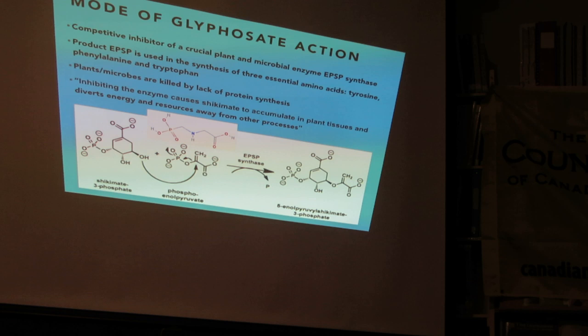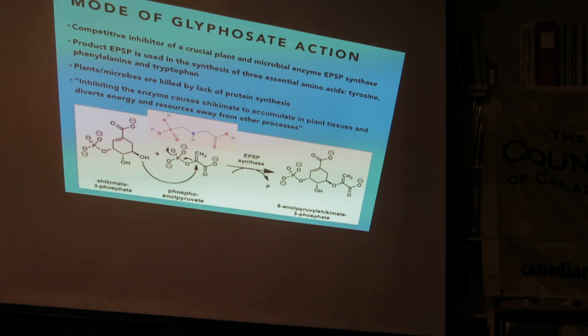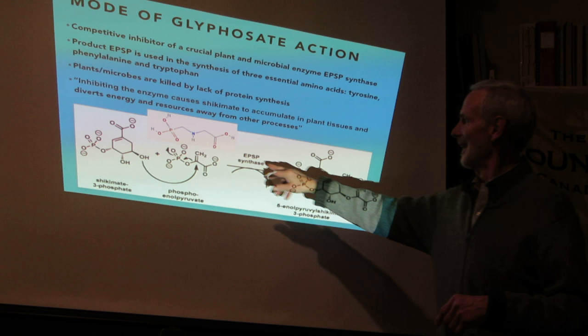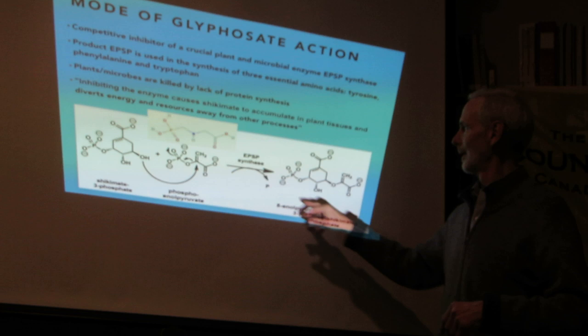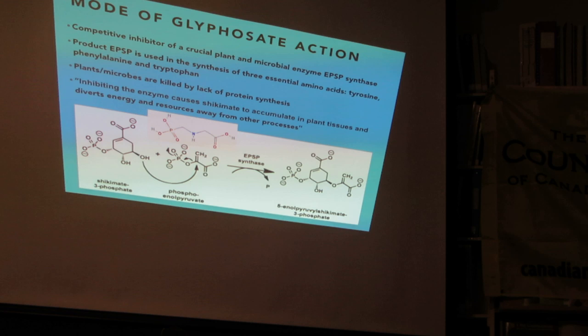So why is glyphosate toxic to plants but not to you and me? It's because plants need to make tyrosine, phenylalanine, and tryptophan — those three of the 20 amino acids that we don't make, but plants make for us. There are microbes that can make these as well, which is another part of the story. The enzyme involved is EPSP synthase — EPSP stands for 5-enolpyruvylshikimate-3-phosphate — and that is the enzyme that glyphosate works against.